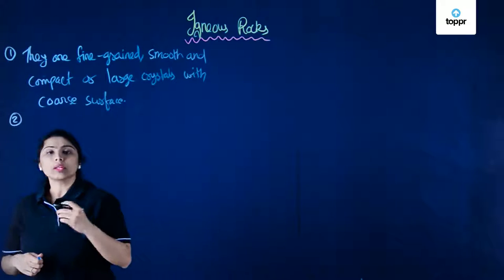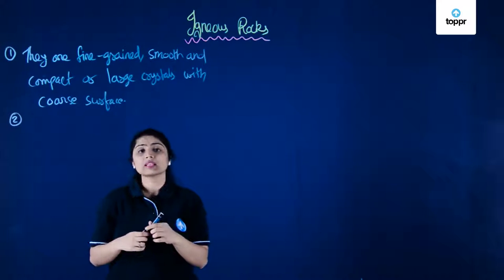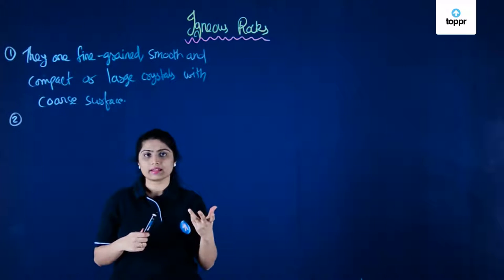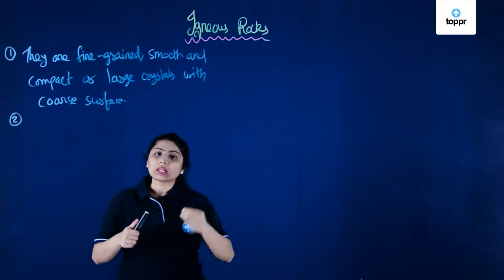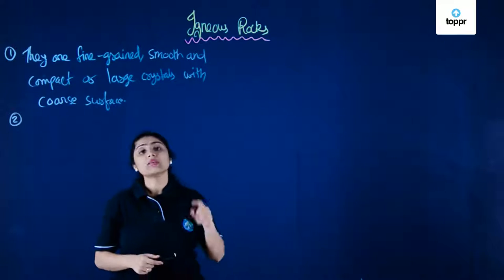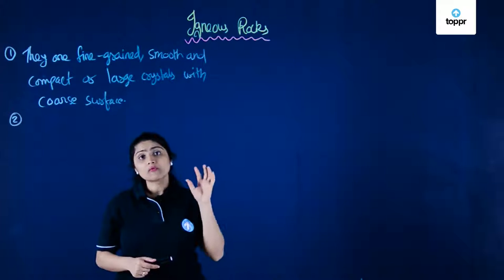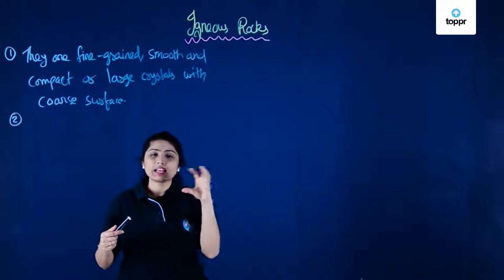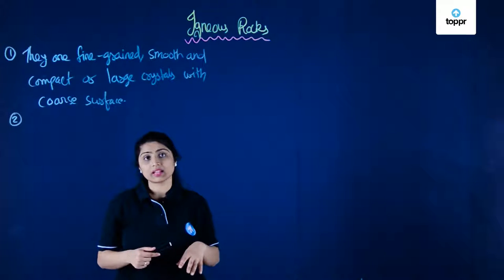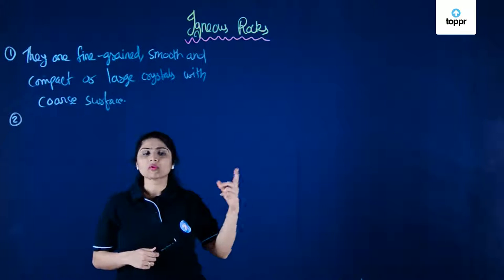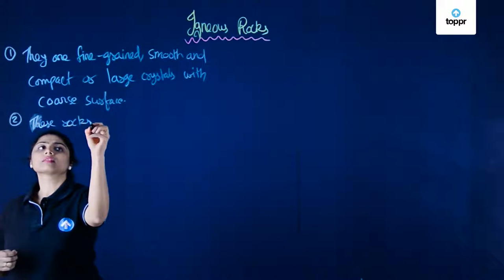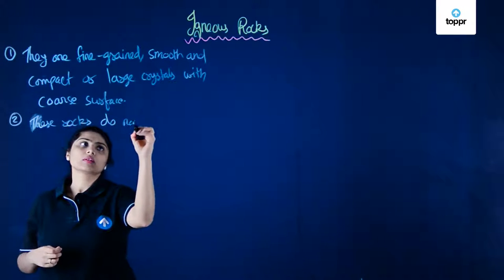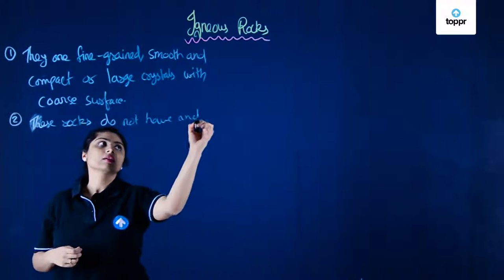The second characteristic is about fossils. Fossils are the dead remains of any living organism. In igneous rocks, there are no fossils because these rocks are made purely from the cooling of magma. When you talk about sedimentary rocks, they are formed with dead remains of aquatic animals in between, in layers — that's why they have fossils, but igneous rocks do not.